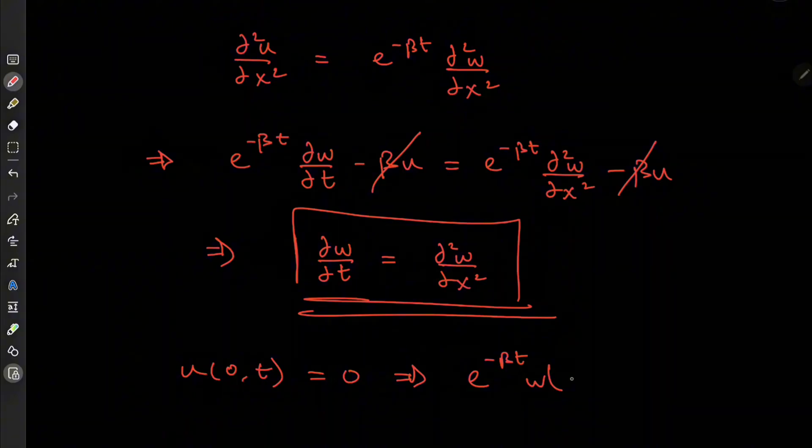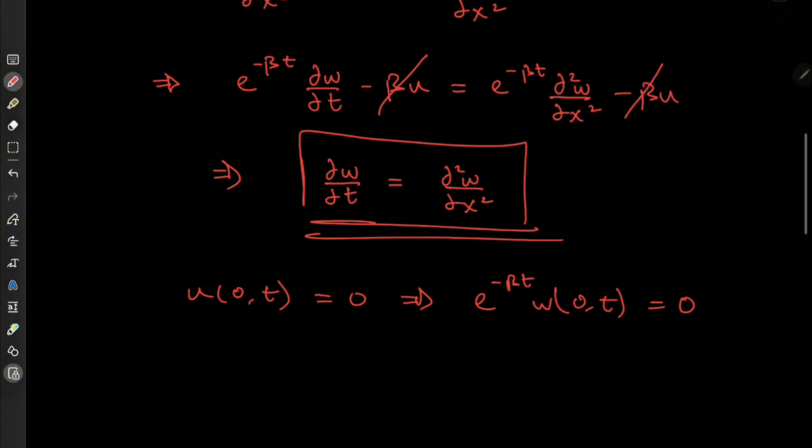times w of 0,t is equal to 0. And again, because the exponential term is non-zero, this implies that w of 0,t would be 0.